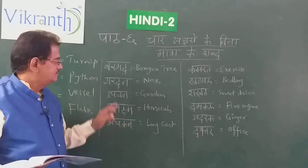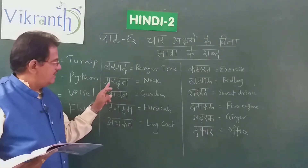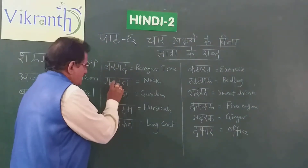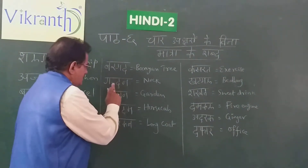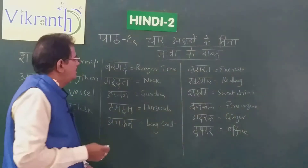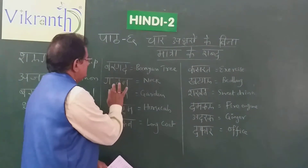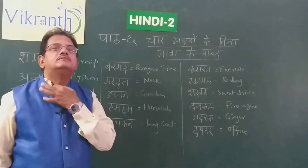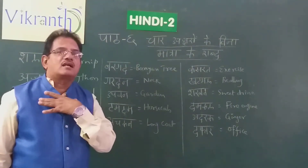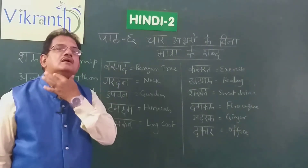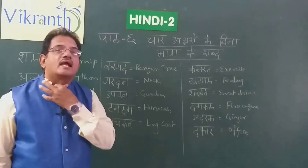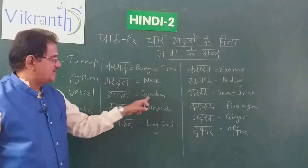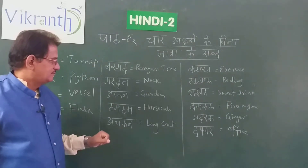Then we have Gardan. Gardan means Neck — the part of the body which joins the trunk with the head. This is called Gardan — neck. Next, Upavan — Upavan means garden. You know garden?